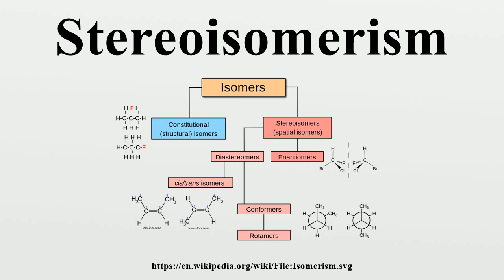It is not the case that Z and cis, or E and trans, are always interchangeable. Consider the following fluoromethylpentene: the proper name for this molecule is either trans-2-fluoro-3-methylpent-2-ene, because the alkyl groups forming the backbone chain reside across the double bond from each other, or Z-2-fluoro-3-methylpent-2-ene, because the highest priority groups on each side of the double bond are on the same side. Fluoro is the highest priority group on the left side, and ethyl is the highest priority group on the right side. The terms cis and trans are also used to describe the relative position of two substituents on a ring — cis if on the same side, otherwise trans.